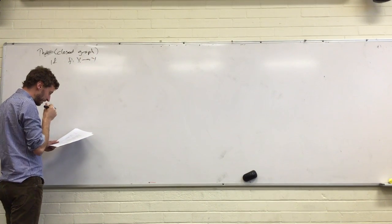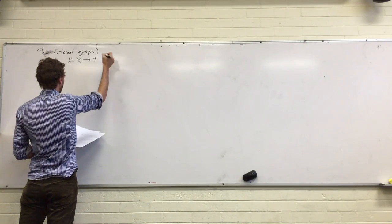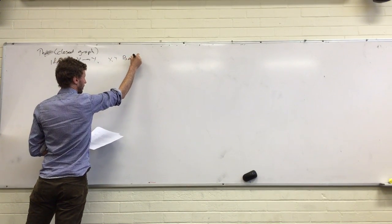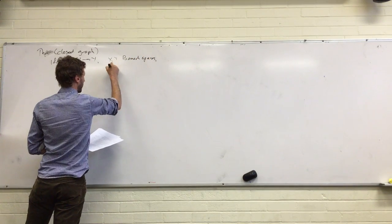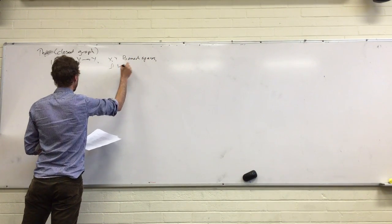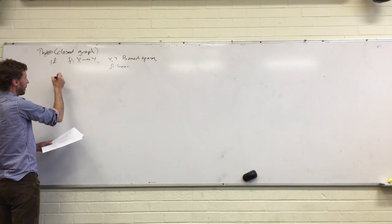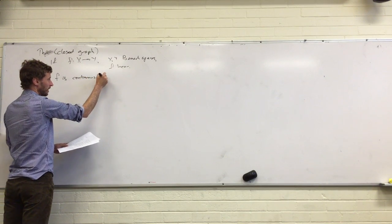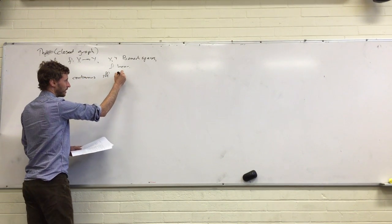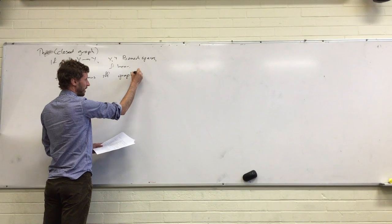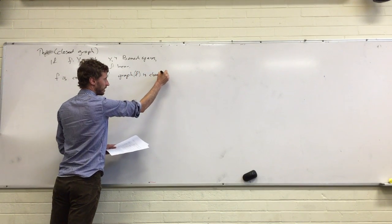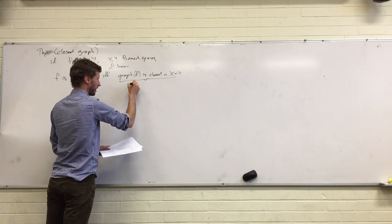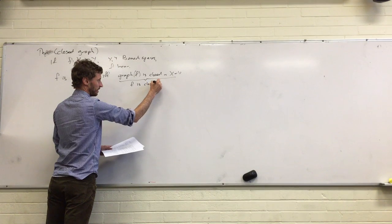We're mapping X to Y, where X and Y are Banach spaces. We're making a map. If f is continuous, if and only if the graph of f is closed in X cross Y. And of course, that whole phrase there, we just say f is closed.